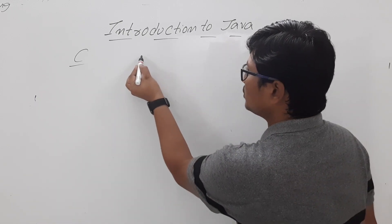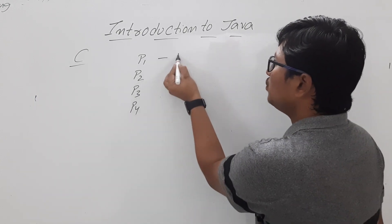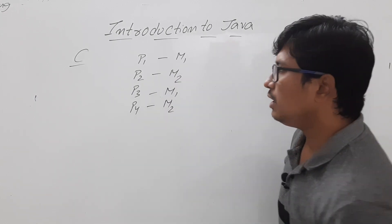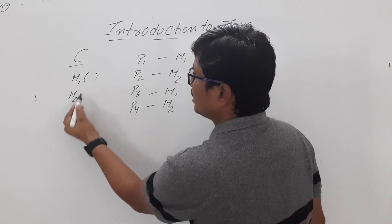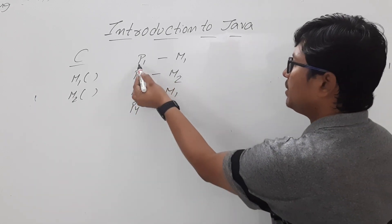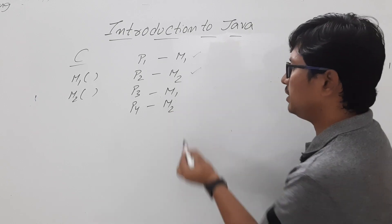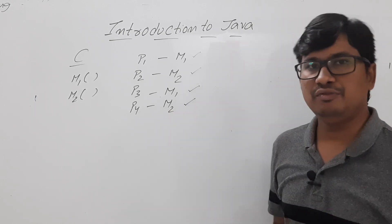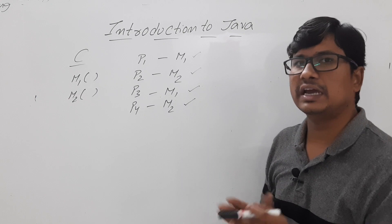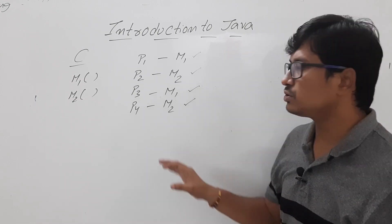Let me explain the limitations with an example. Suppose there are four persons — P1, P2, P3, P4 — who want to watch movies M1, M2, M1, and M2 respectively. You write functions called M1 and M2. When P1 wants to watch M1, you call function M1; for P2 you call M2, and so on. The issue is that C just looks at the task and executes it — it does not consider the broader structure, which increases program complexity.